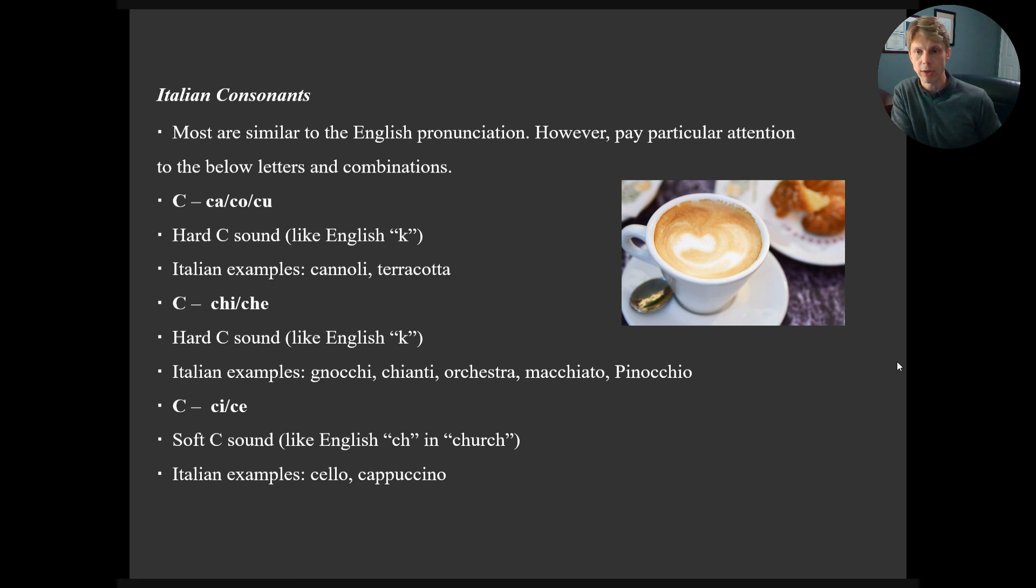Moving on to the consonants. So we do have many similar pronunciations in the alphabet as we do in English. But the consonants do have some differences. And the ones I want to point out here are the ones that are most significant. And that is the C, which has a hard sound, as in ca, co, cu, as in English K. And some examples you may know would be cannoli or terracotta.